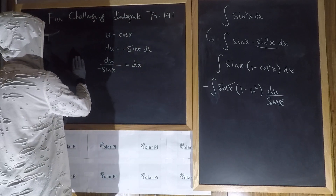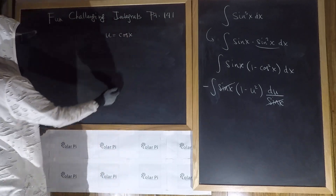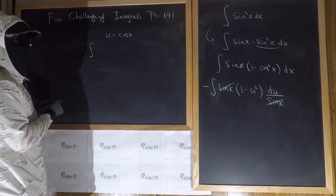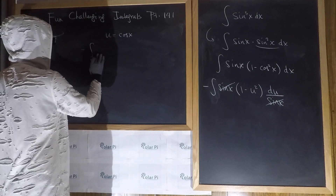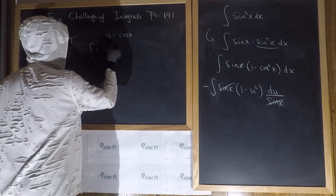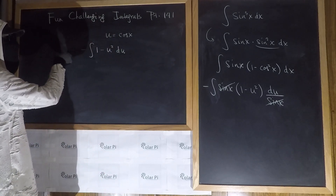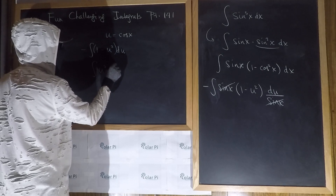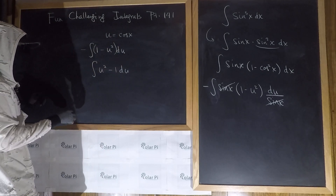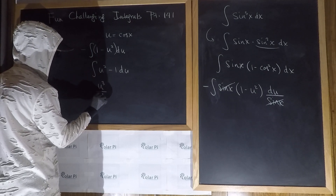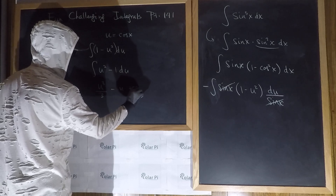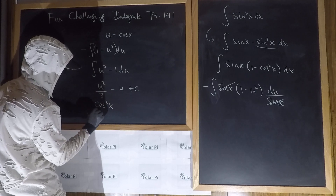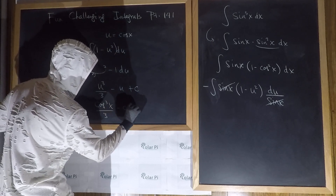Then we have the negative integral of one minus u squared du. Distributing the minus sign, that becomes the integral of u squared minus one du. This is simple: u cubed over three minus u plus C. Since u is cosine, we get cosine cubed x over three minus cos x plus C.